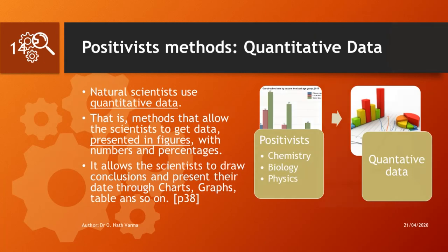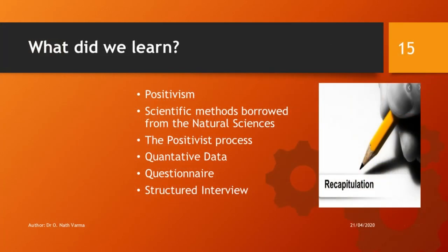So let's see what we learned today. We started by introducing positivism — the positivists are those who use the natural science method, the scientific method borrowed from the natural sciences, in sociology. We looked at the positivist process — the systematic way through which the sociologist gathers information. We also explained how natural scientists use quantitative data and how positivists in sociology likewise use quantitative data, gathered through questionnaires and structured interviews, with different examples of each.